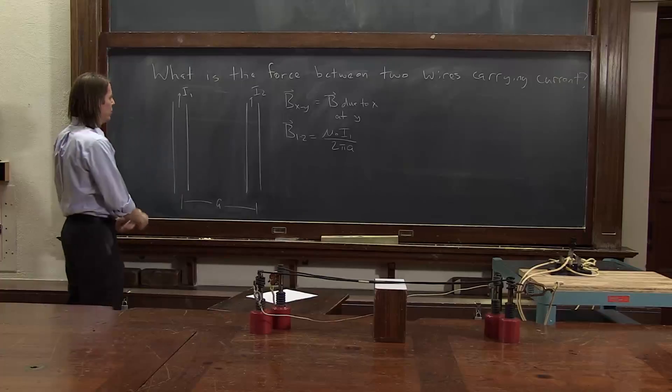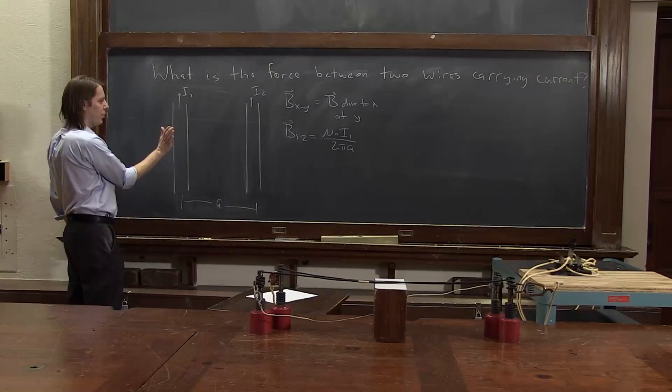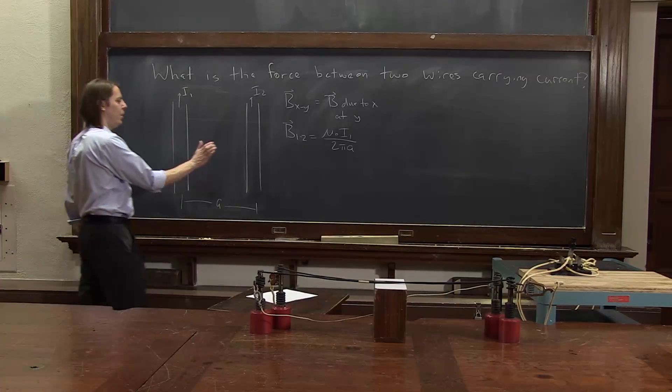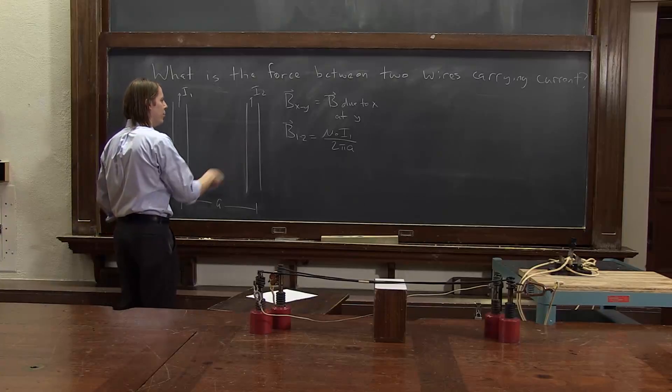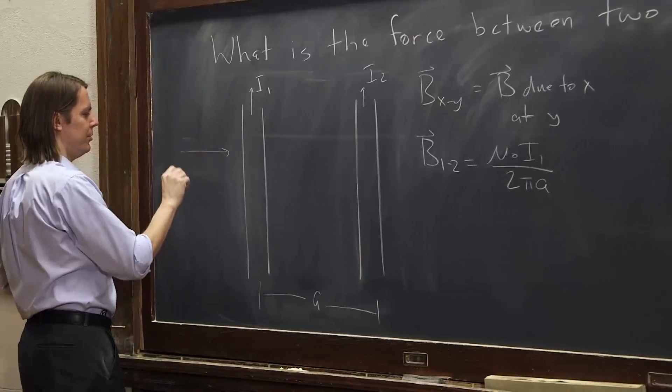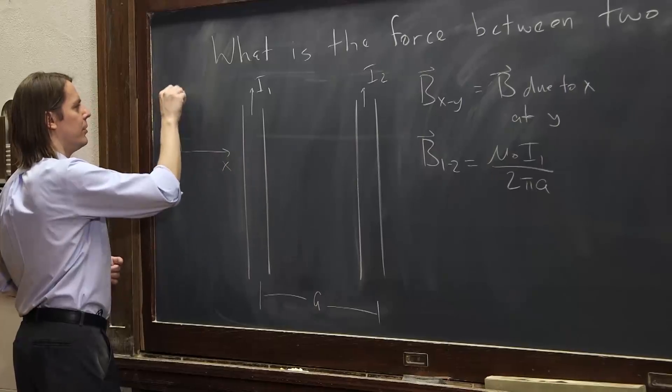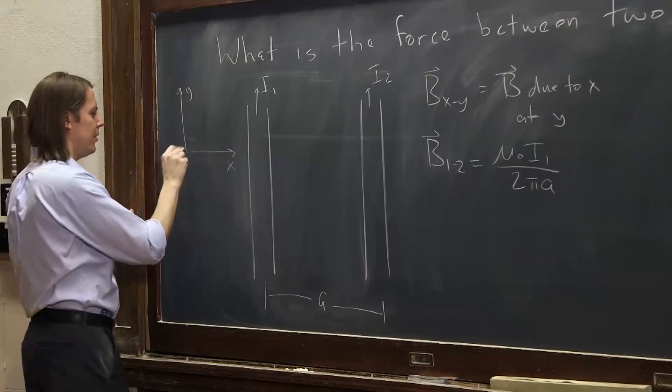For the direction, we use the right-hand rule. We put our thumb along the current. Our fingers curl in the direction of the magnetic field. Our fingers are curling into the board here. And why don't we go ahead and do this with a coordinate system? I know some of you really like the coordinate systems. X cross Y, Z is straight out of the board.